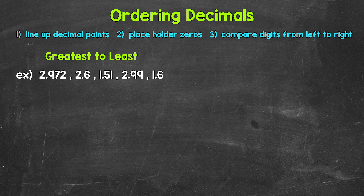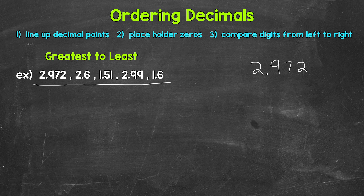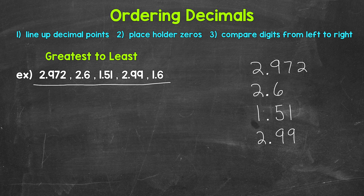The first thing we're going to do to help us order these is line them up off to the side, and we're going to line up the decimal points. This is going to line up all of the places. So we'll start with 2 and 972 thousandths, then 2 and 6 tenths, then 1 and 51 hundredths, then 2 and 99 hundredths, and then 1 and 6 tenths.